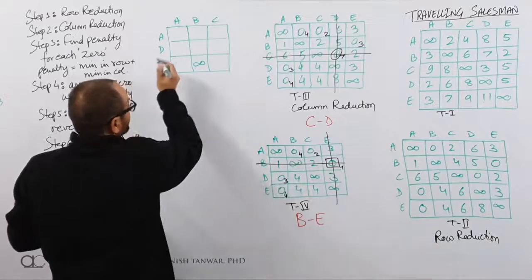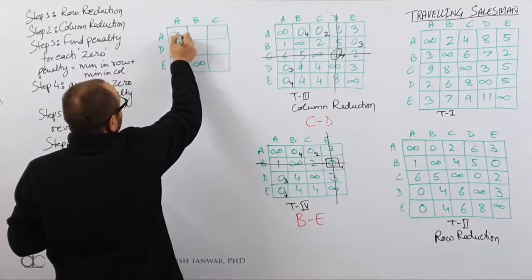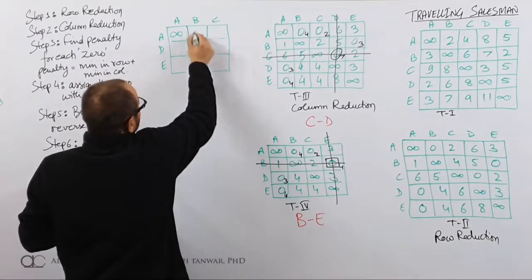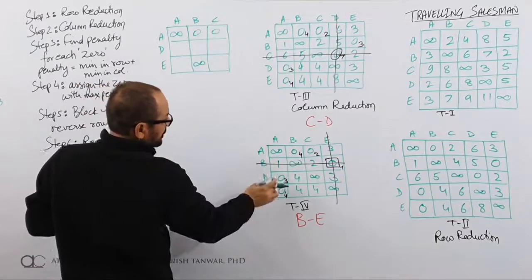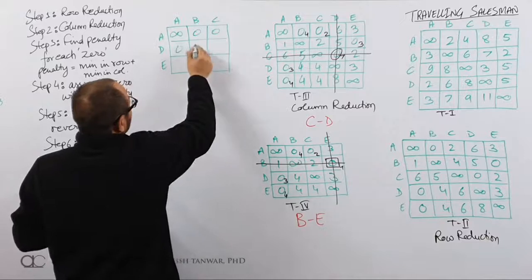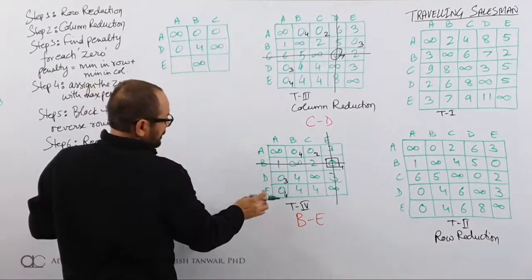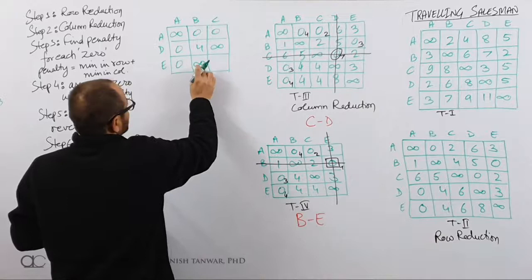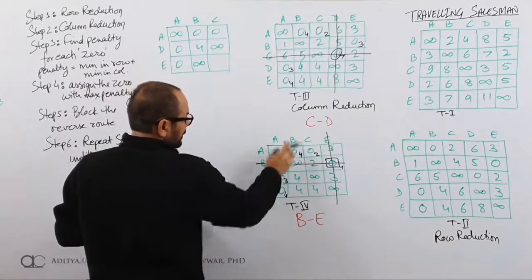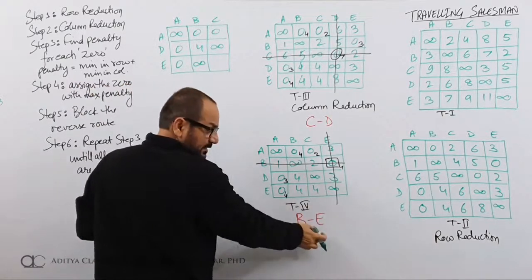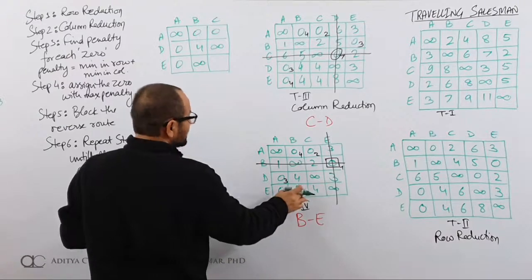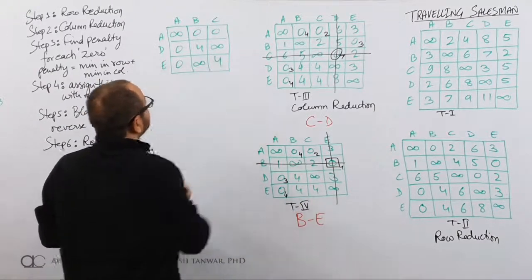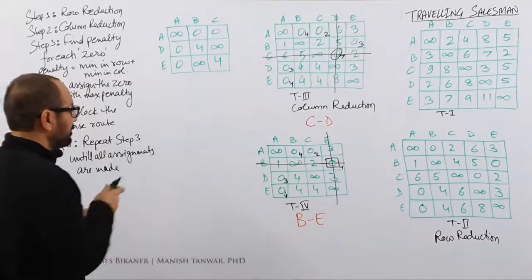Let me copy the values to T5, which is now a 3×3 matrix with A, D, E as sources and A, B, C as destinations. B to E is assigned, so block E to B — that cell is made infinity. Self routes A to A and D to D are gone. The remaining values are: 0, 0; then 0, 4, infinity; then 0, 4, 4 with E to B converted to infinity. E to C would be 4.